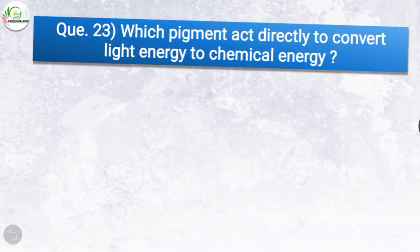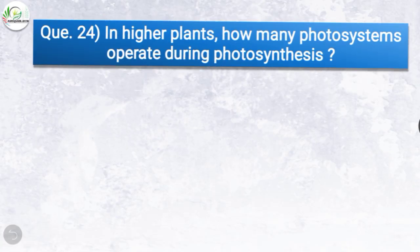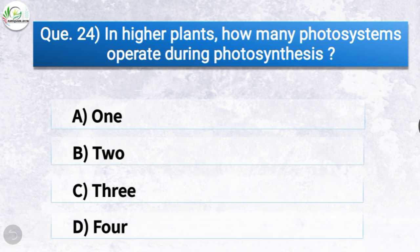Question 23: Which pigment acts directly to convert light energy to chemical energy? Options: chlorophyll a, xanthophyll, chlorophyll b, or carotenoid. The correct answer is option A — chlorophyll a. Question 24: In higher plants, how many photosystems operate during photosynthesis? Options: one, two, three, or four. The correct answer is option B — two. In higher plants, photosystem one and photosystem two both operate during photosynthesis.